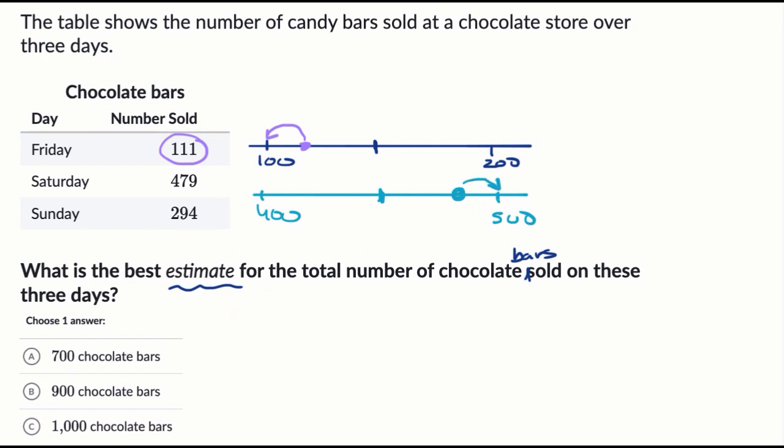And then last but not least, we can look at Sunday, and it's between 200 and 300. And this is the halfway point. And 294 is really close to 300. It's something like right over there. So this one is definitely more than halfway, very close to 300. And so once again, if I were to estimate between 200 and 300, I would pick 300.